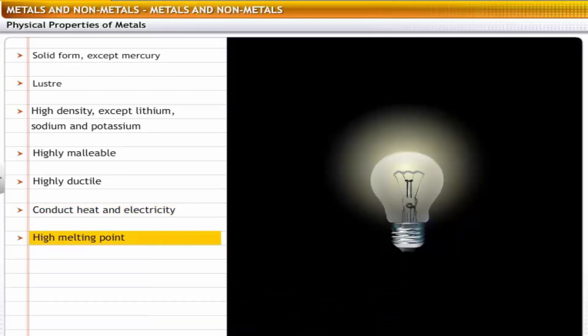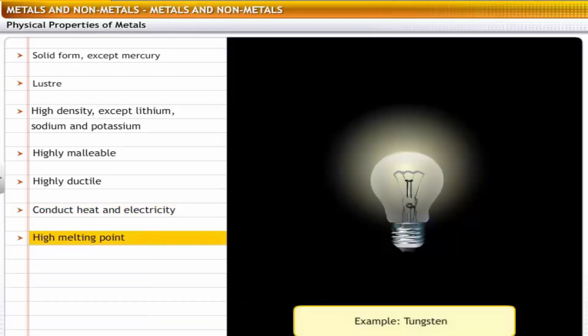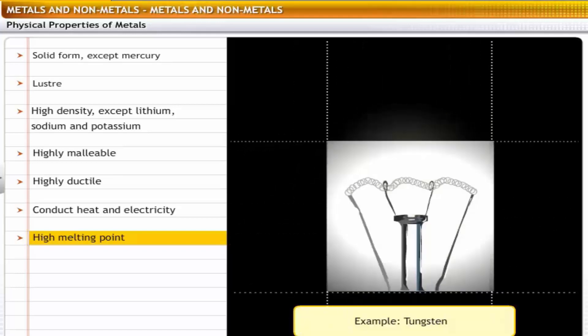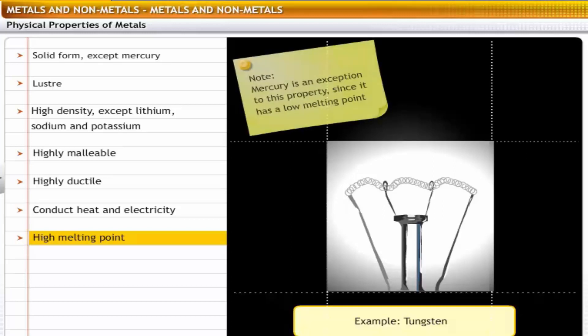Metals have high melting points. For example, tungsten has a high melting point, due to which it is used in bulb filaments. Mercury is an exception to this property since it has a low melting point.